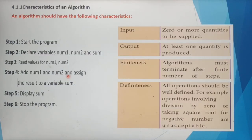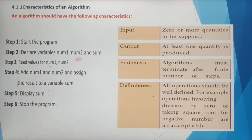The third characteristic is finiteness. Algorithms must terminate after a finite number of steps. Each algorithm must have some finite number of steps — here we are having six steps. The algorithm must not run in infinite order; it must be terminated, which is called finiteness.